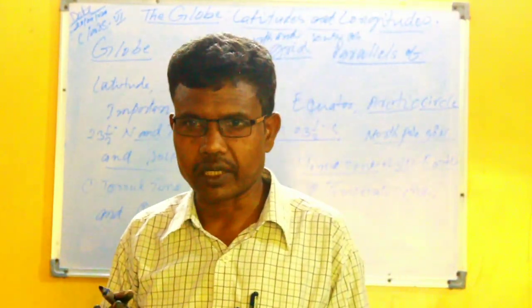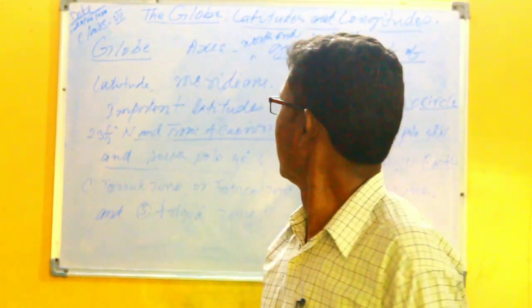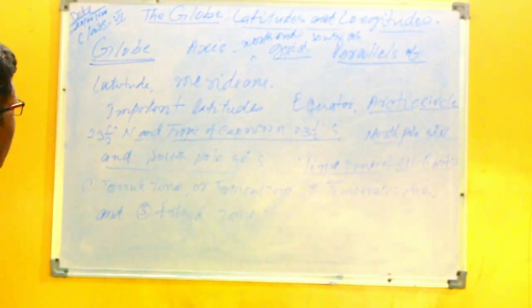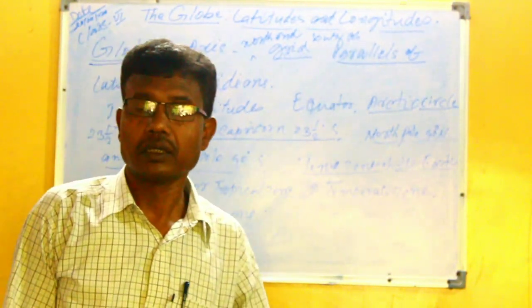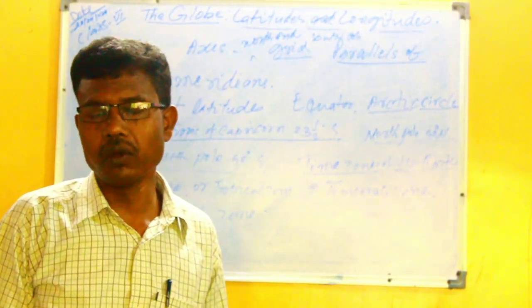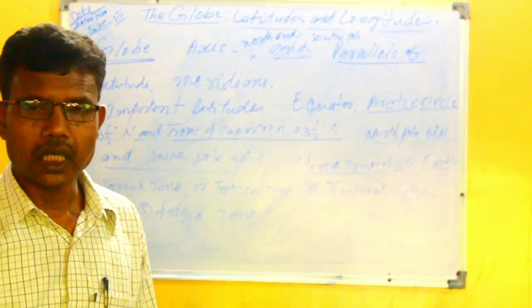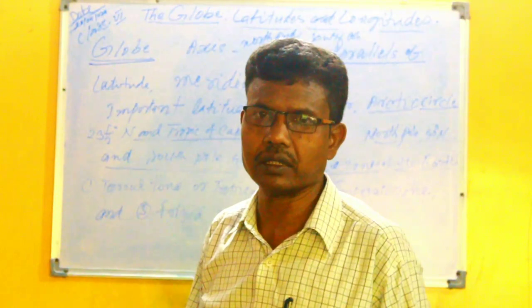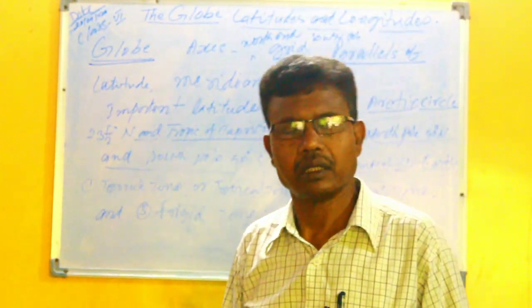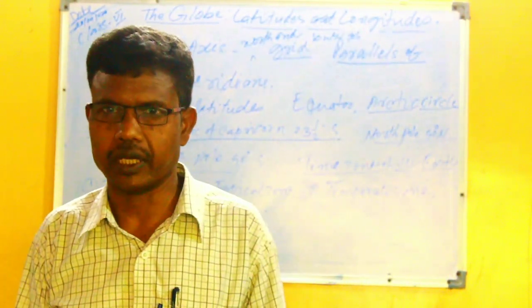Now let us try to understand what is a globe. To understand the Earth better, we need an accurate or true representation of it. A globe fulfils this condition. A globe is a spherical representation of the Earth.